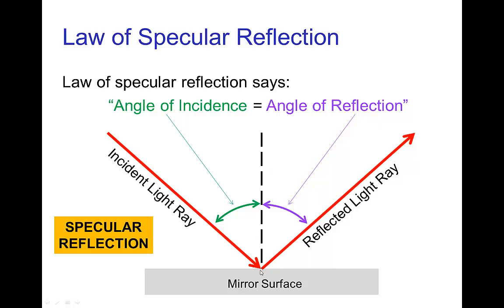These angles are measured from a line perpendicular to the surface of the mirror and it says that the angle of the incoming incident light ray is the same angle as the reflected outgoing light ray.